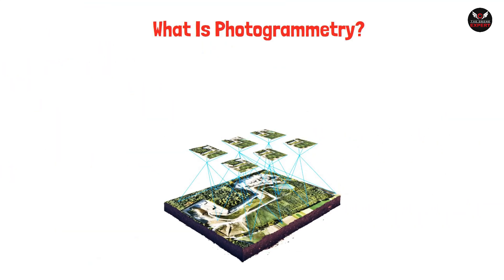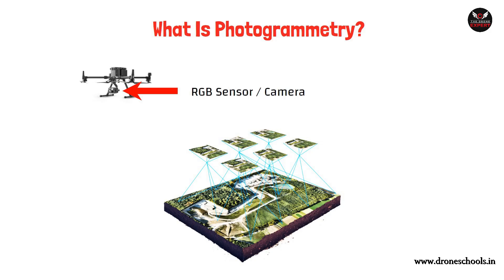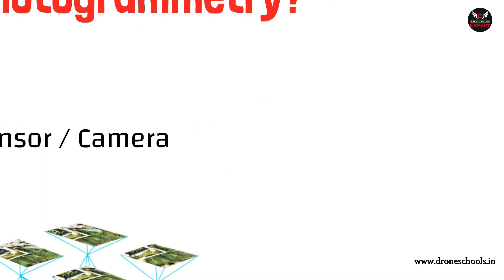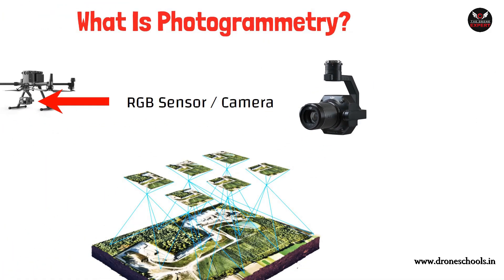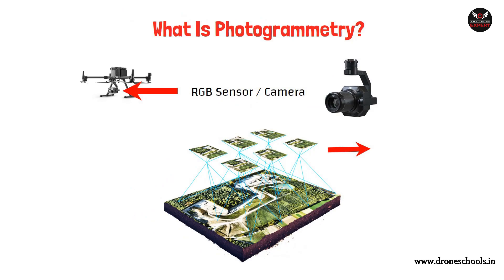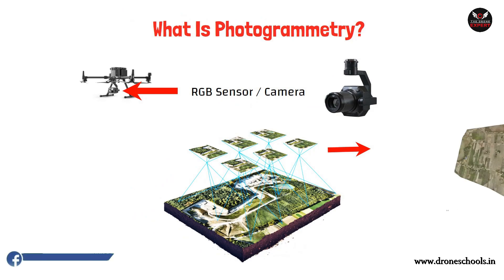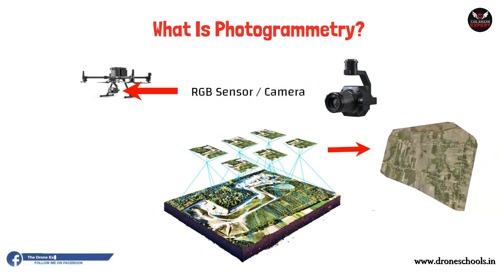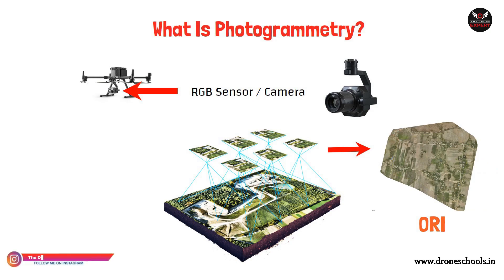Now let's understand photogrammetry. In the photogrammetry process, a drone captures numerous images using an RGB sensor or a camera. These images are then stitched together to create a map. If you want to learn more about photogrammetry, check out our complete video on it — the link is in the description.